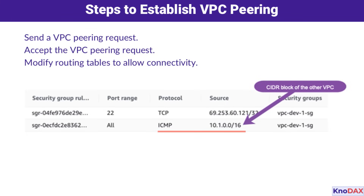In other words, if you are testing using ping from the EC2 instance in one VPC to another VPC, make sure you have modified the security group settings to allow inbound connection for ICMP to the other VPC CIDR, and vice versa.